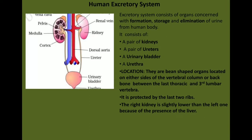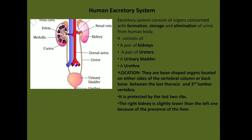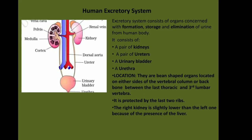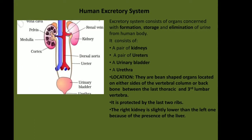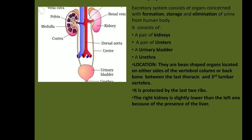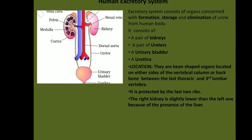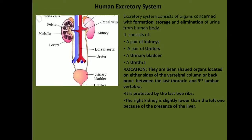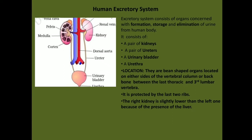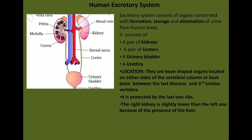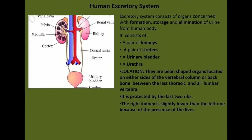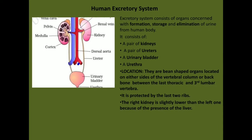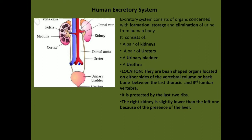The excretory system consists of a pair of kidneys, a pair of ureters, a urinary bladder, and urethra. The kidneys are bean-shaped organs located on either side of the vertebral column between the last thoracic vertebrae and the third lumbar vertebrae, protected by the last two ribs. The right kidney is slightly lower than the left one because of the presence of the liver.